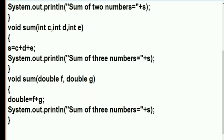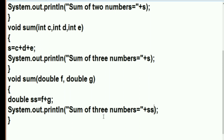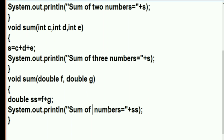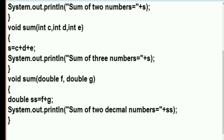I'll declare 'double ss' as a new variable to store the double value. Then in System.out.println we'll write 'sum of two decimal numbers' concatenated with the variable ss. In this way we complete all three different methods — the method names are the same, which is what method overloading is, but there are changes in the parameters.